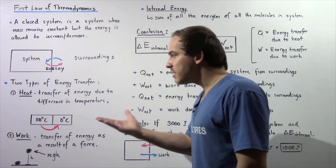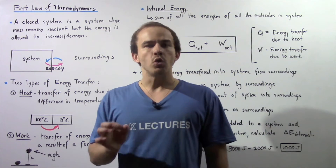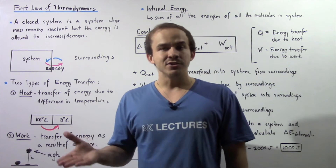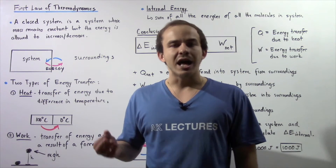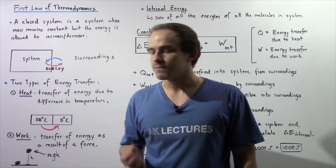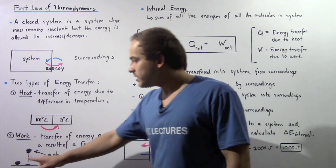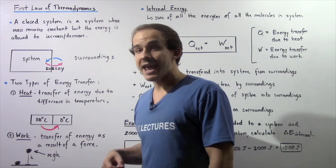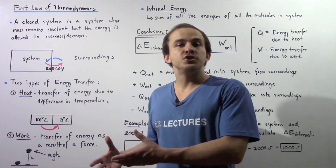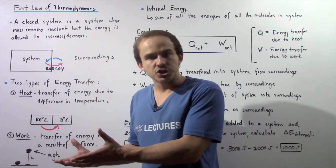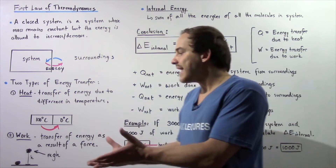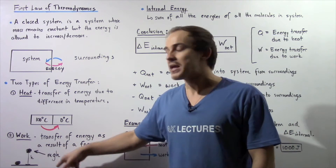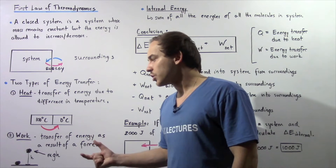The second type of energy transfer is known as work. Work is essentially the transfer of energy as a result of an applied force. For example, if we take an object and raise it a certain distance h, then that object gains potential energy — it gains energy in the form of mass times g times h. So that is known as work.